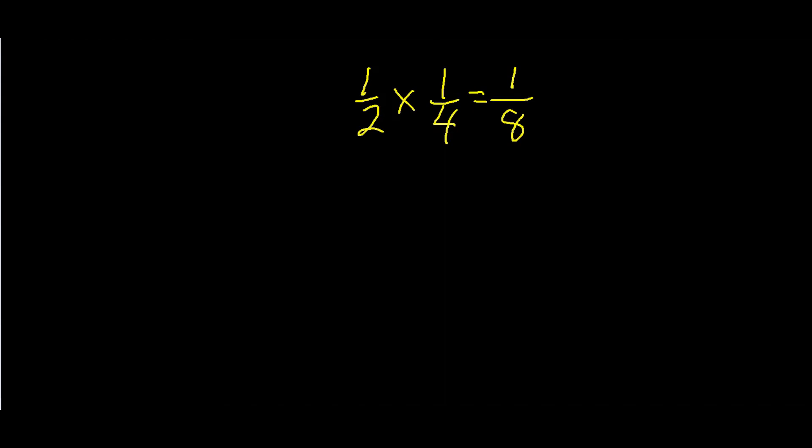Let's do another one. Number B is 1 third times 2 thirds. So, 2 times 1 is 2, 3 times 3 is 9, so 2 ninths.